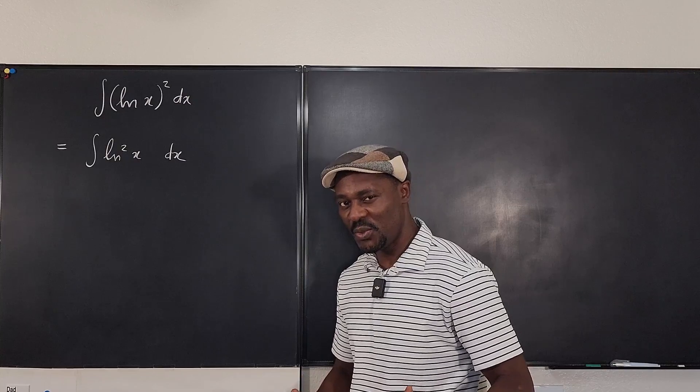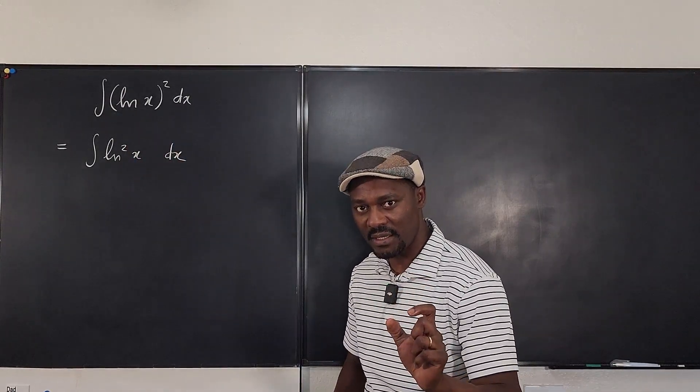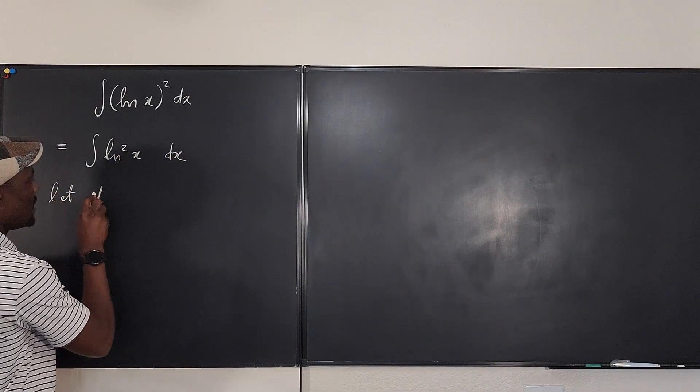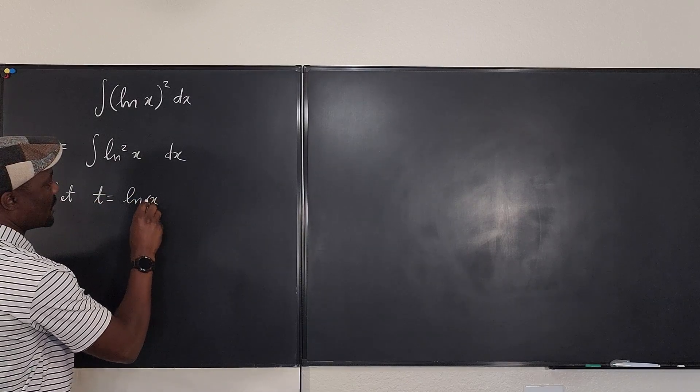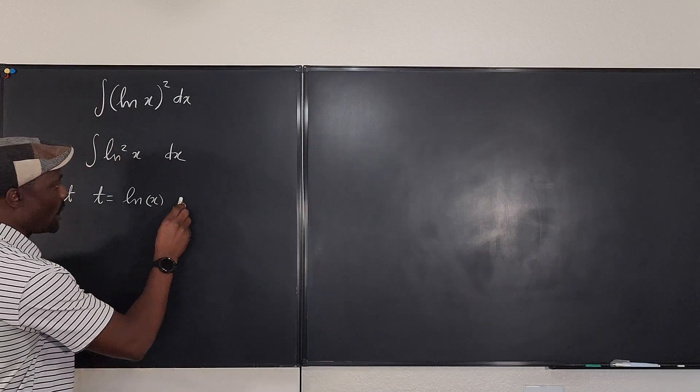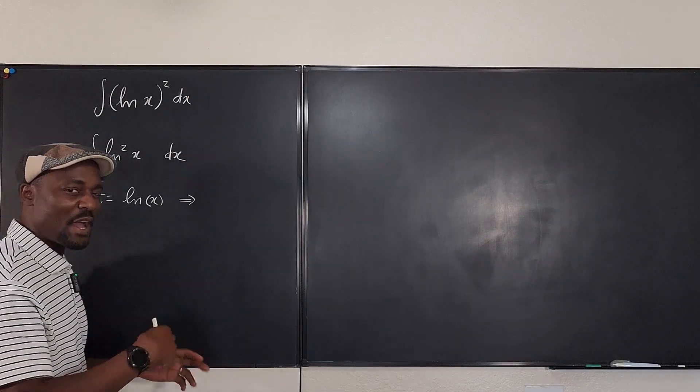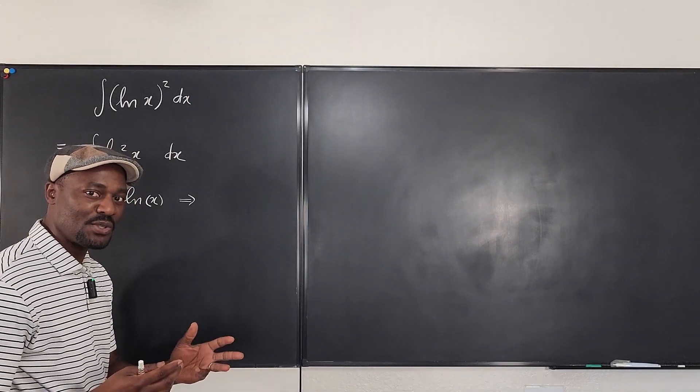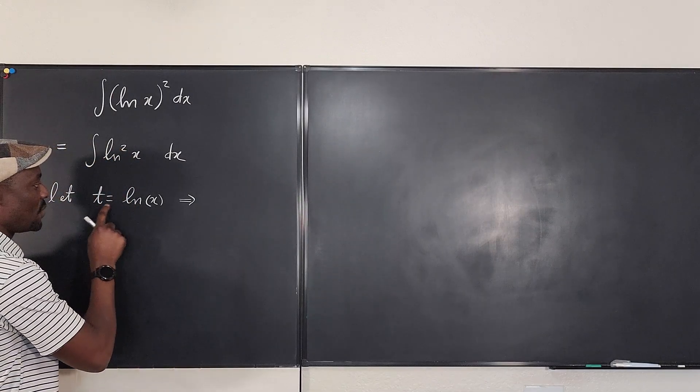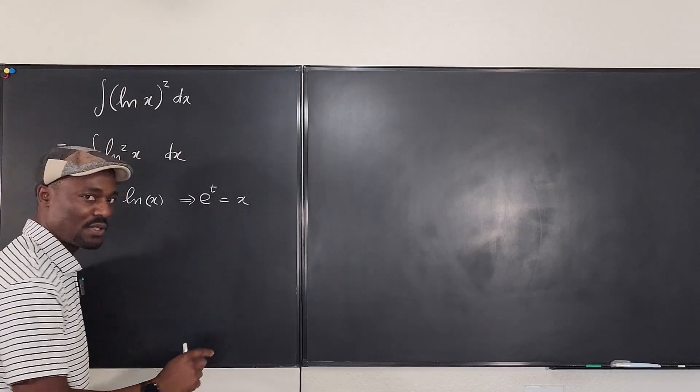So let's do this u substitution. I'm going to replace ln of x with the expression t. So I'm going to say let t be equal to ln of x. If I differentiate both, what does this mean? If t is ln of x, this you might always have to do every time you do u substitution involving natural log. If I take the e of both sides, you notice that e to the t will be equal to x. This is important that we keep it.